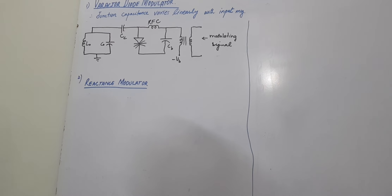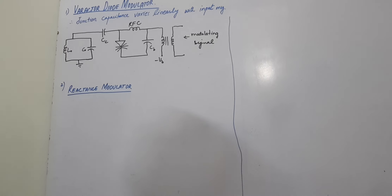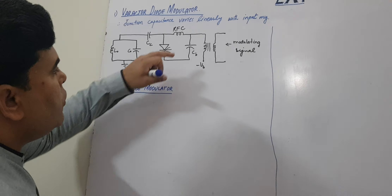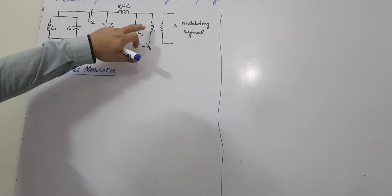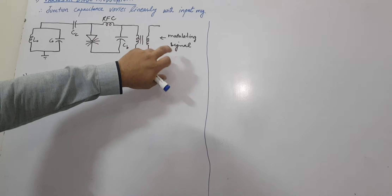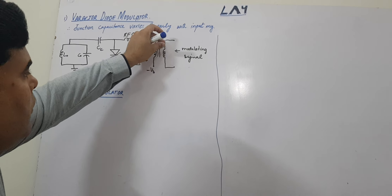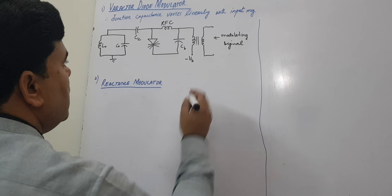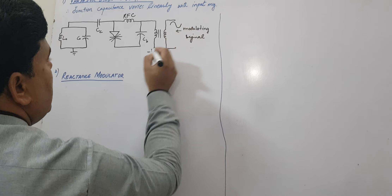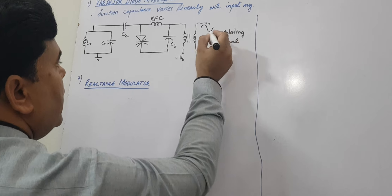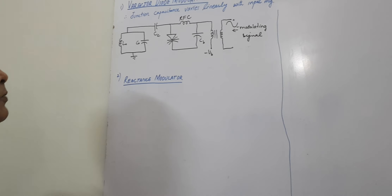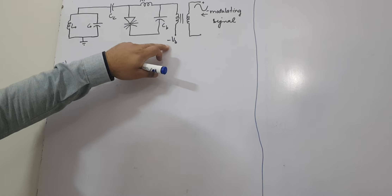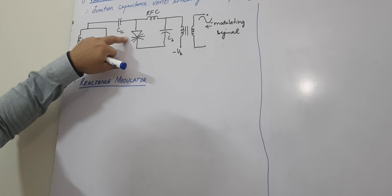This one is the radio frequency choke, which is used here in order to isolate the reverse bias from the modulating signal. This one is the blocking capacitor and this is the transformer — primary and secondary — and the modulating signal is given as input from these two terminals as a sinusoidal wave with positive and negative values. The most important thing to understand in this circuit is the application of minus VB. Why minus VB? Because this diode should be a reverse bias device.